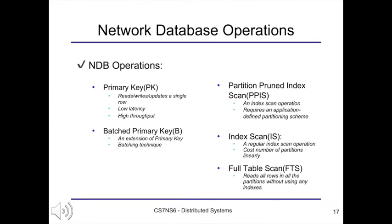Primary key operations read a single row from a table in NDB using appropriate locks. NDB provides low latency and high throughput for this type of operation, as it only involves a single partition. It distributes rows in a table based on the primary key if application-defined partitioning is not used. If application-defined partitioning is used, NDB uses the partition key instead, ensuring the operation runs on the NDB data node that holds the rows for that partition by leveraging the distribution-aware transaction feature.